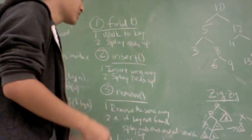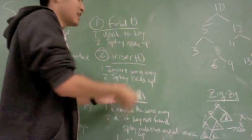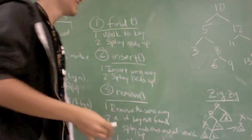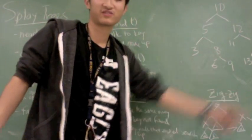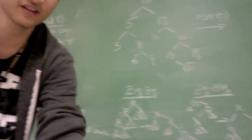What splaying does is it essentially allows a tree to kind of balance itself, usually through the zig-zag procedure that we'll show you.